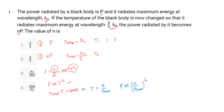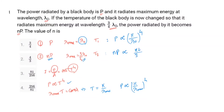For case one: P is proportional to (k / lambda-naught) to the 4th. For case two: nP is proportional to (k / (3/4 lambda-naught)) to the 4th. Dividing equation one by equation two gives P divided by nP equals (k/lambda-naught)^4 divided by (k · 4/(3·lambda-naught))^4.